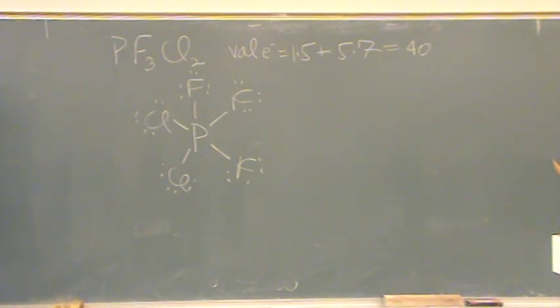I didn't draw the shape, but there's five groups, meaning there's five single bonds. There's no lone pairs. So what do we call this? Trigonal bipyramidal.